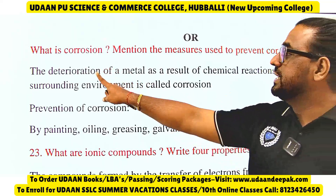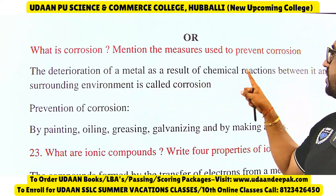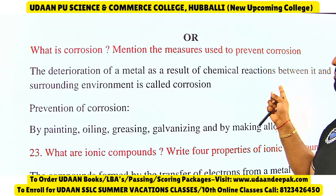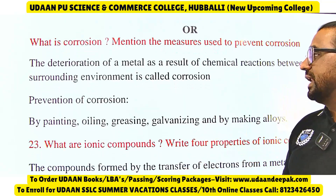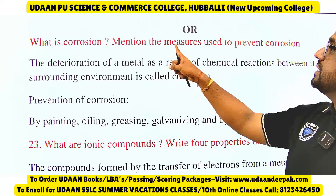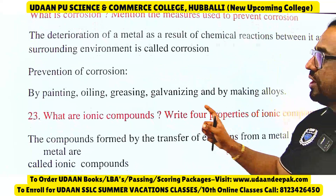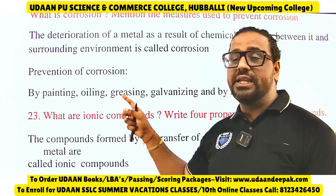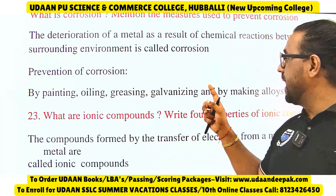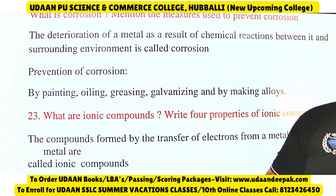What is corrosion? The deterioration of metal as a result of a chemical reaction between it and the surrounding environment is called corrosion. Measures used to prevent corrosion include painting, oiling, greasing, galvanizing, and making alloys.